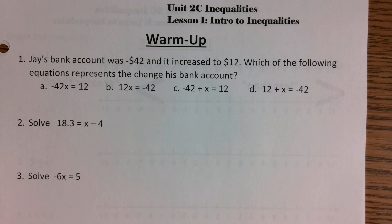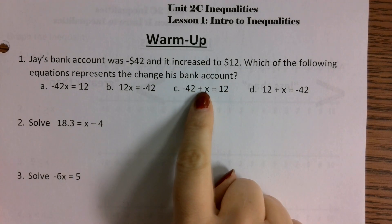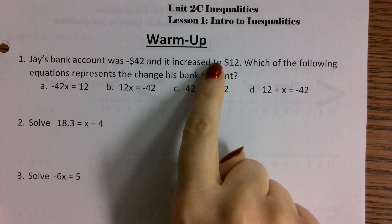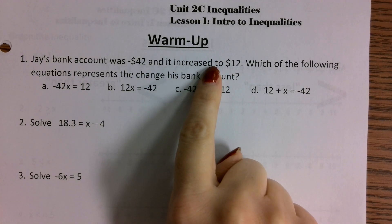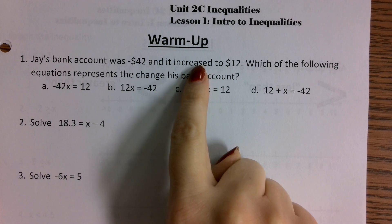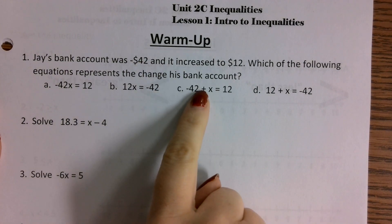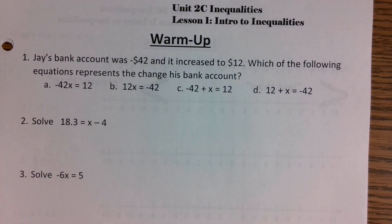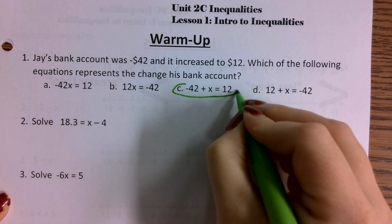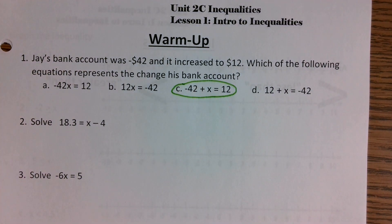For problem number one, Jay's bank account was negative forty-two dollars and then it increased to twelve dollars. Starting at negative 42, it increased until it got to twelve dollars. It says 'increased to,' not 'increased by' — so you're not adding 12 to it. You start at negative forty-two and increase until you reach twelve dollars. That's going to be answer choice C.